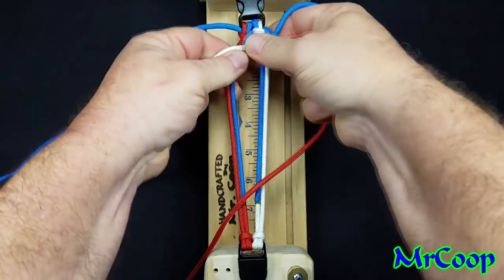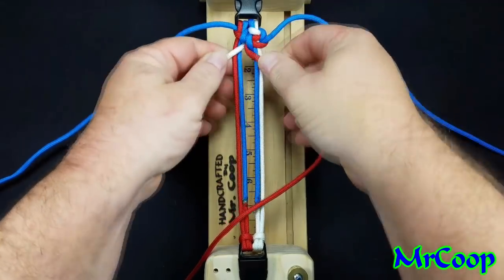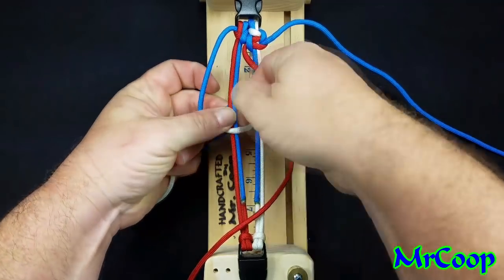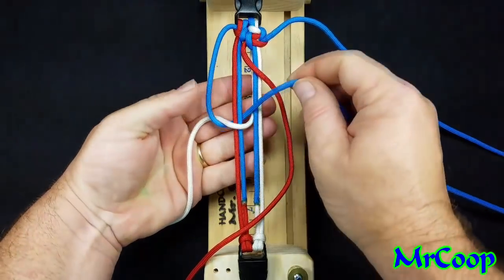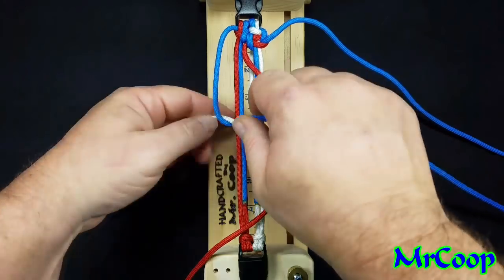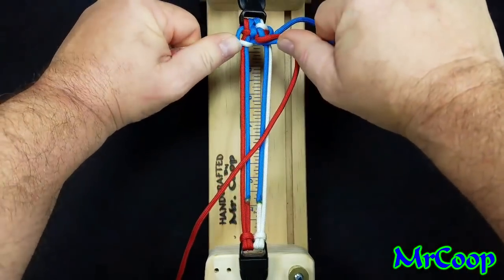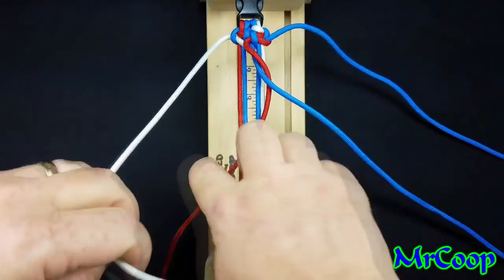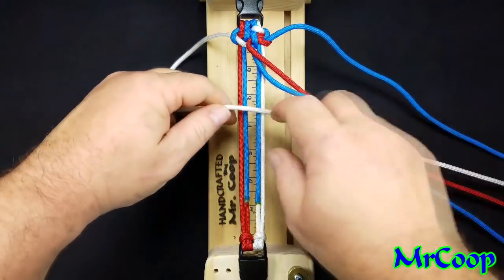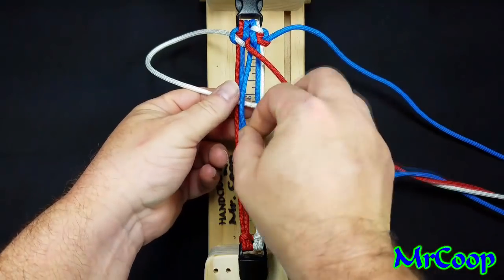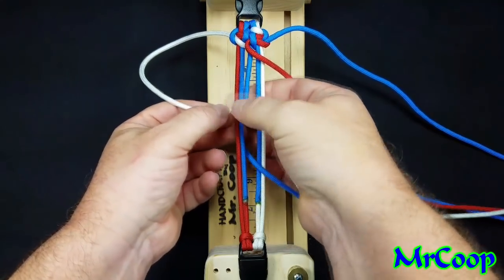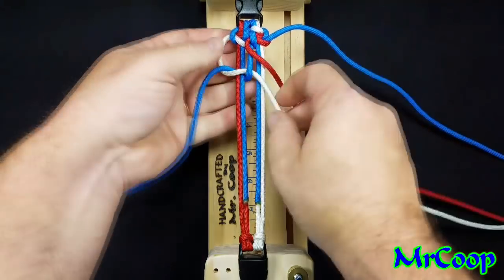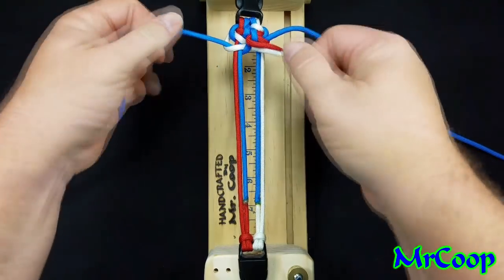Now we're going to do the same thing with the white. Blue, over, under, through the hole. Should look just like that. Pull it down tight. Once again, white over, blue over the white, through the middle, out the hole on the other side. Should look just like that. Pull her down tight.